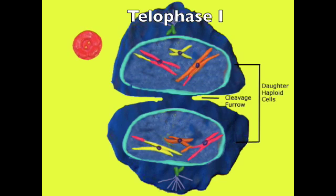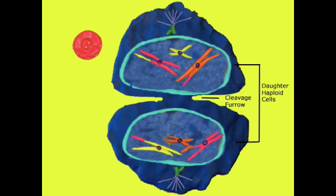During telophase, the spindle fibers begin to break down and the chromosomes uncoil. A cleavage furrow forms in the middle of the cell and cytokinesis then occurs. This yields two new daughter cells with half the number of chromosomes as the parent cell. This means that two haploid cells are now formed.